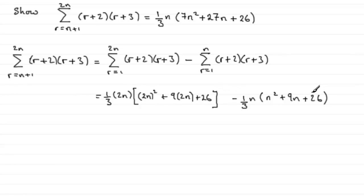Okay, so that's what we should have. And then all we need to do is take 1/3·n out as a common factor. So if we do that, 1/3·n.